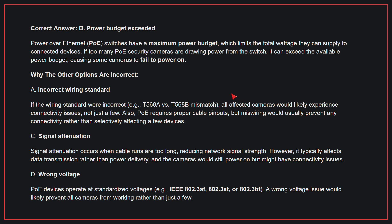Why the other options are incorrect: A, incorrect wiring standard. If the wiring standard were incorrect, all affected cameras would likely experience connectivity issues, not just a few; PoE requires proper cable pinouts, but miswiring would prevent any connectivity rather than selectively affecting a few devices. C, signal attenuation. Signal attenuation occurs when cable runs are too long, reducing network signal strength; however, it typically affects data transmission rather than power delivery, and the cameras would still power on but might have connectivity issues. D, wrong voltage. PoE devices operate at standardized voltages; a wrong voltage issue would likely prevent all cameras from working rather than just a few. Therefore, the correct answer is B: Power budget exceeded.